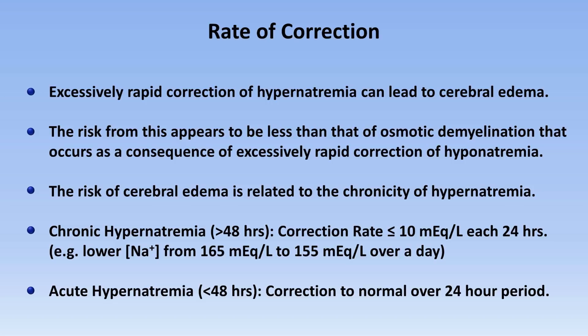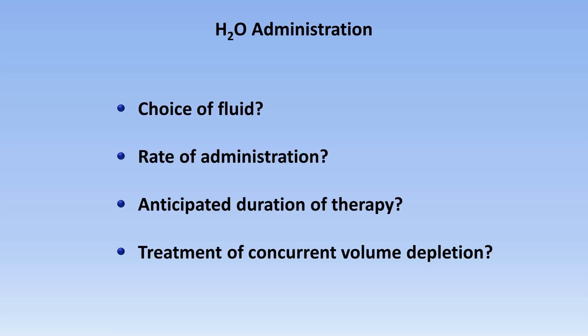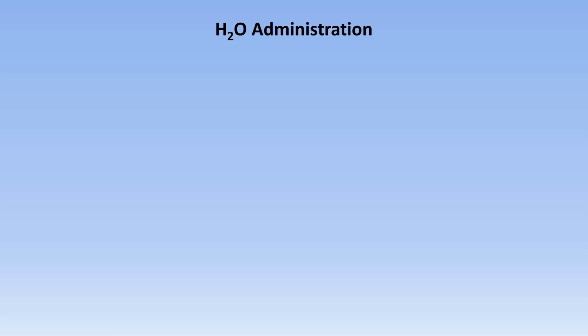The primary therapy for all etiologies of hypernatremia is administration of water, and to do this we must answer four questions: What fluid are we going to use? What should the rate of administration be? What is the anticipated duration of therapy? And do we need to worry about concurrent volume depletion, which should be seen as a problem distinct from the hypernatremia? Oral water is the preferred route for patients with mild to moderate hypernatremia who are able to drink on their own, though by the time a patient presents to the hospital with hypernatremia, he or she will likely be too ill to do this.